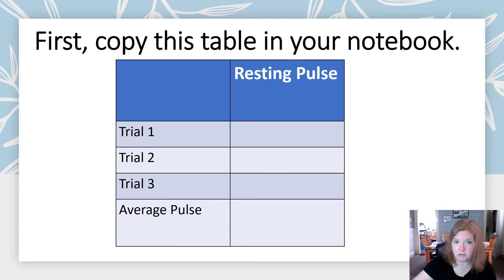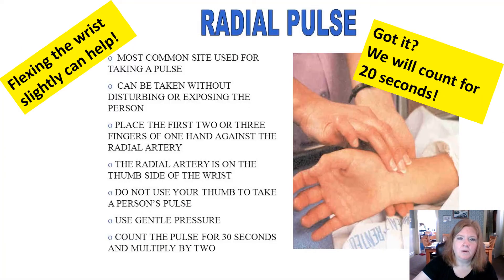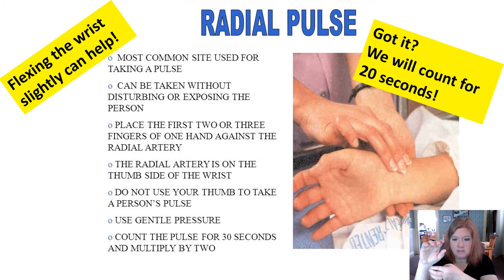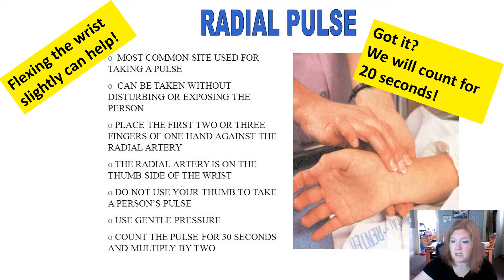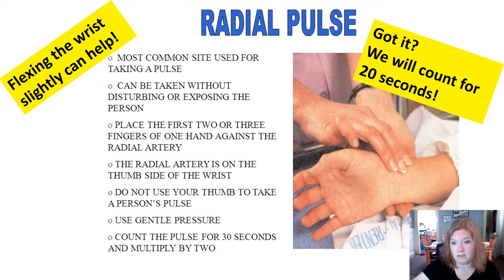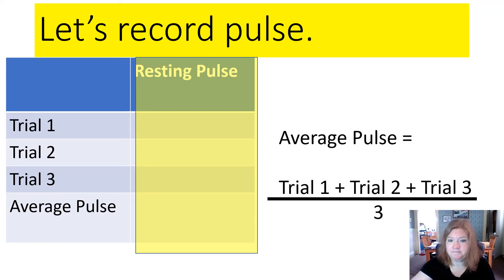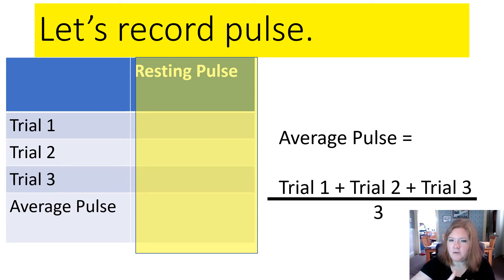We're going to copy a table in your notebook and measure our radial pulse. Get on the radius side — thumb side — of your wrist, use two fingers, and feel the pulse. We'll count for 20 seconds, then multiply by three to get beats per minute. Record your pulse and then calculate your average pulse.